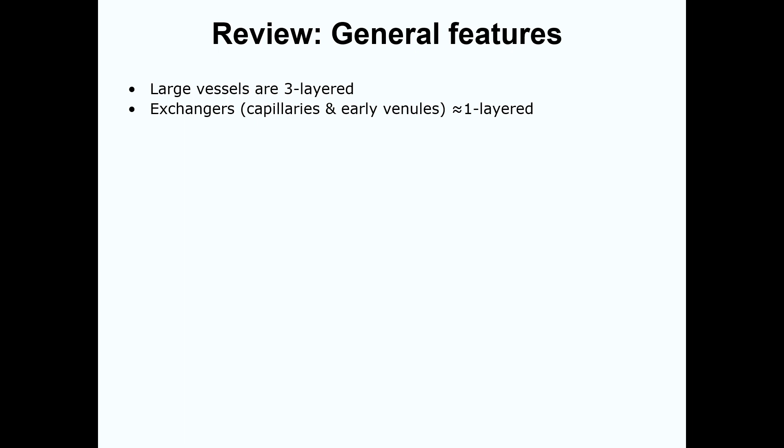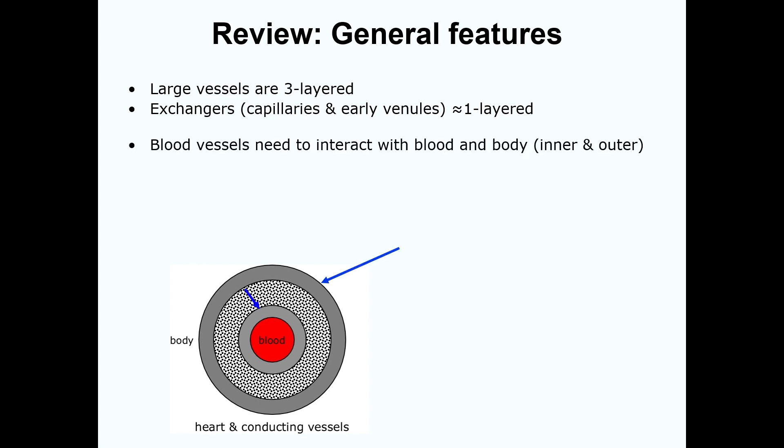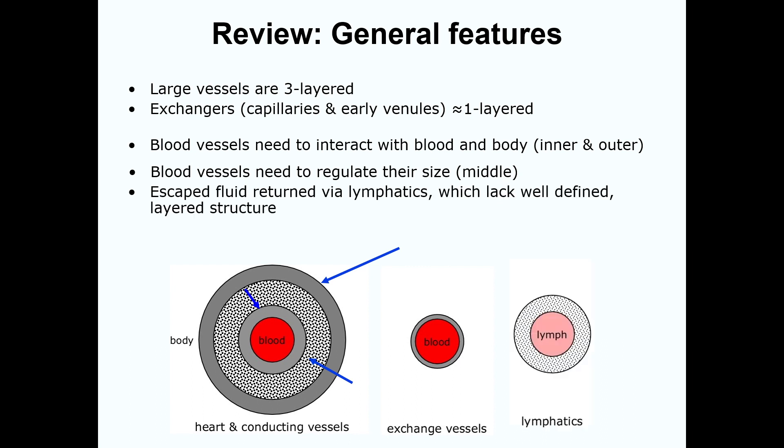We'll start by looking at a simple cartoon that illustrates the basics of the layers. Most of the large vessels are three-layered, but those vessels that function as exchangers, such as capillaries and early venules, have only one layer. The outer and inner layers allow the heart and vessels to interact with the body and the blood. As blood pressure changes, vessels need to regulate their size to accommodate pressure changes and varying metabolic needs of tissues, which they do by way of the middle layer. Exchangers such as capillaries and small venules have only one wall, while lymphatic capillaries lack a well-defined layer structure.